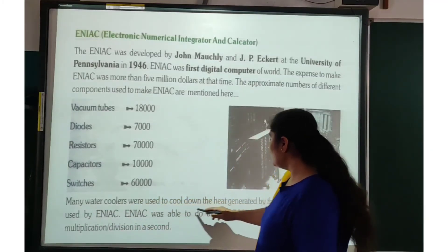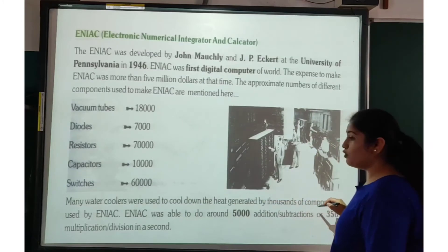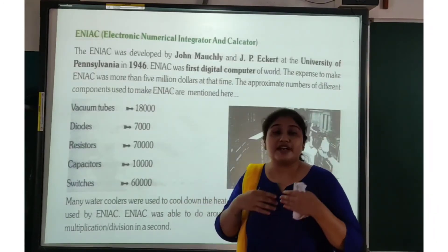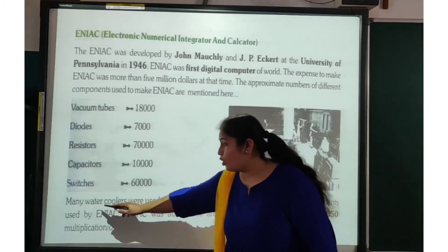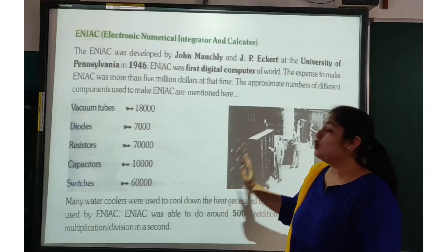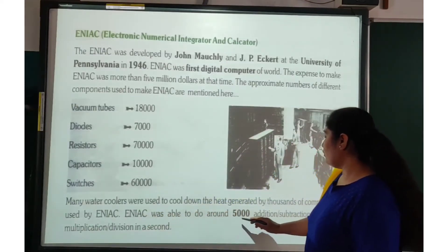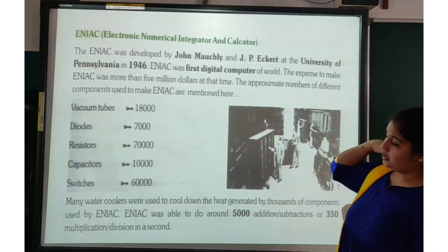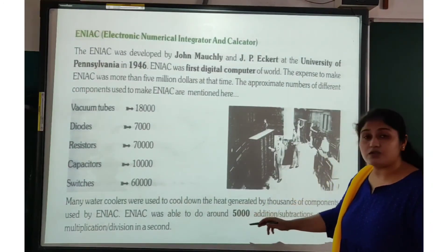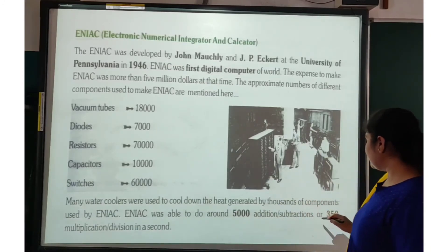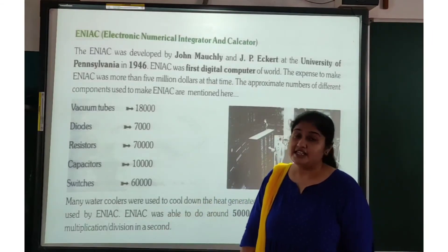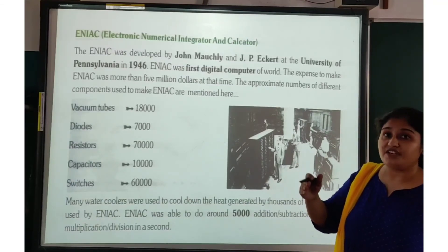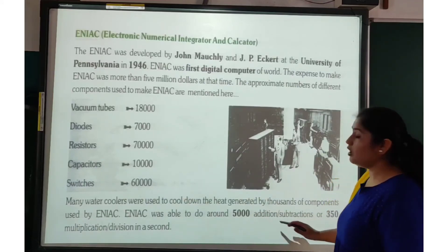Many water coolers were used to cool down the heat generated by the thousands of components used in ENIAC. More than 1,000 components generating heat required water coolers to cool them down. ENIAC was able to do around 5,000 addition or subtraction operations, or 350 multiplication or division operations in a second.